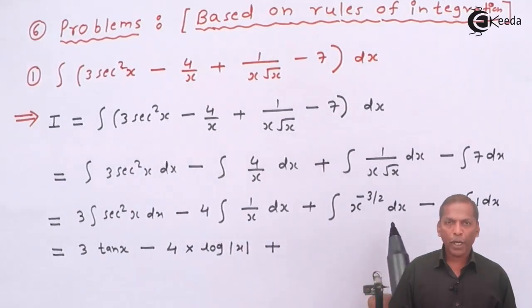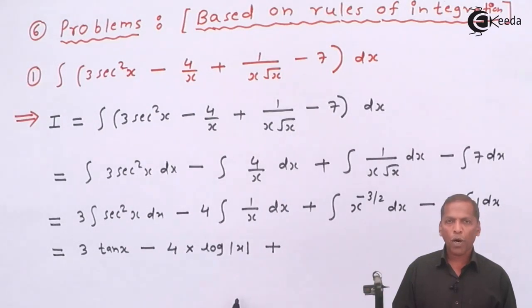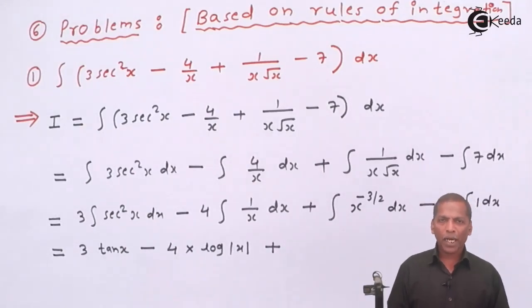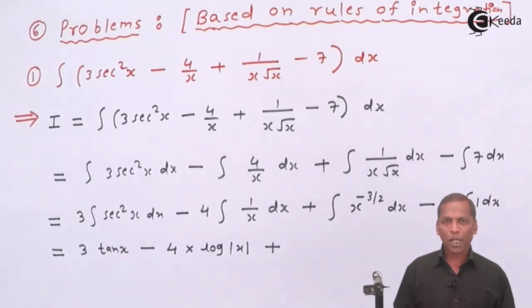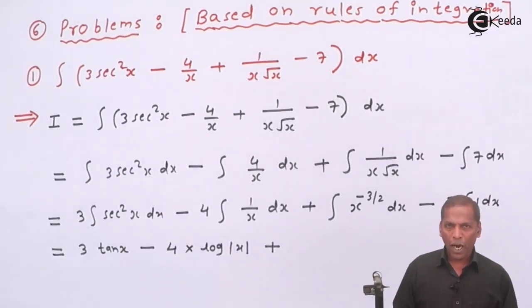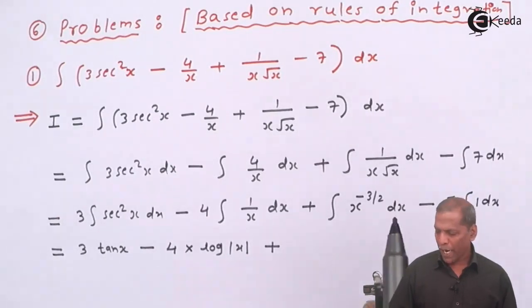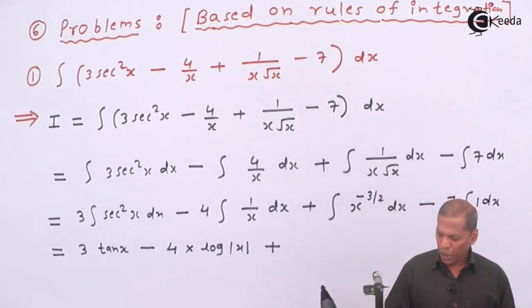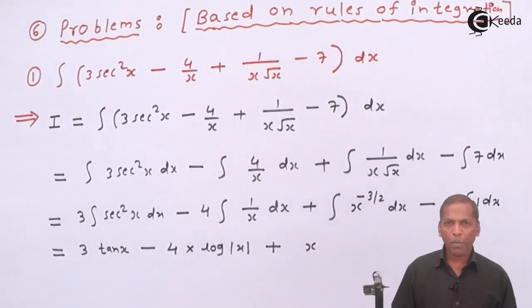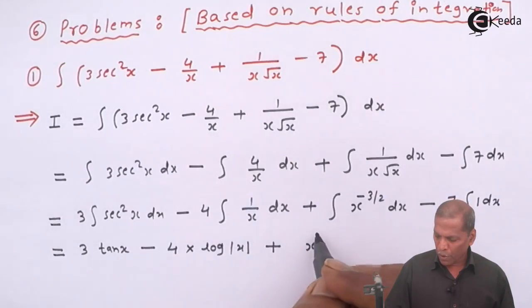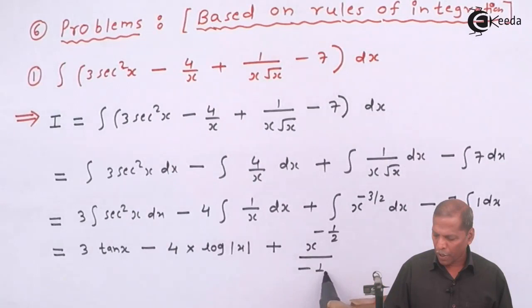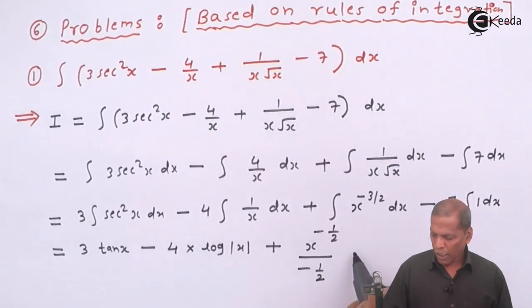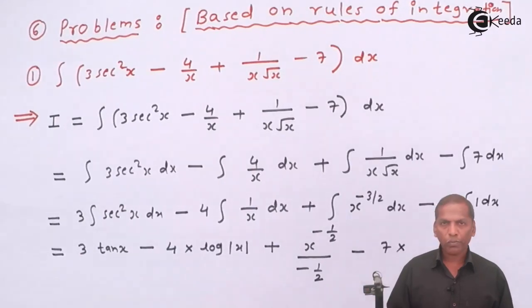For integral x raise minus 3 by 2 dx, we use power rule of integration. That is, integral x raise n dx is equal to x raise n plus 1 whole thing divided by n plus 1 plus c. So here n takes value minus 3 by 2. So here we have x raise minus 3 by 2 plus 1, so that gives minus 1 by 2 upon minus 1 by 2. Then minus 7 into.